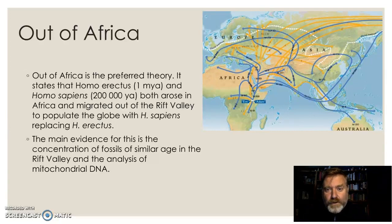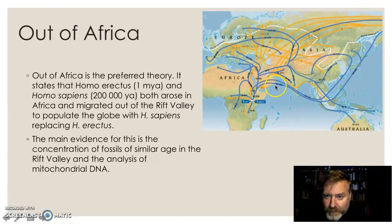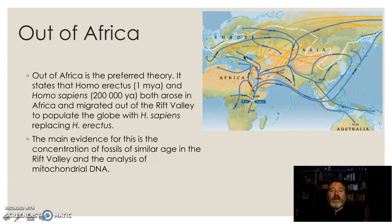Essentially it says that Homo erectus first arose in Africa in the Rift Valley — we've got the Rift Valley just here — and they then move out of Africa and colonise the entire world. These mitochondrial gene traces are being used to follow that. At a later date, Homo sapiens do the same thing. So about a million years ago, erectus spreads across the world, and Homo sapiens 200,000 years ago do the same thing.